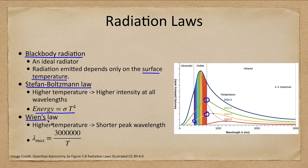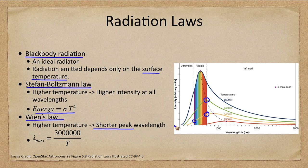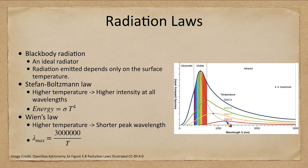Now the other one we want to look at is Wien's Law. Wien's Law says that a higher temperature means the wavelength is shorter at the peak. So let's look at that here in our chart.